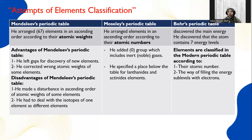Bohr's periodic table: Bohr discovered that the atom contains seven energy levels and he put the modern periodic table. The elements in the modern periodic table are classified according to: number one, their atomic number — not atomic weight like Mendeleev — and number two, the way of filling of the energy sub-levels with electrons. Rutherford discovered that the nucleus of the atom contains positively charged protons.